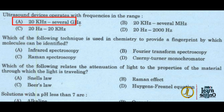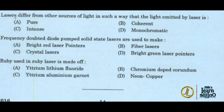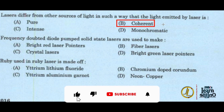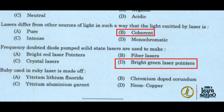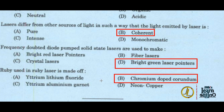Ultrasonic devices operate with frequencies in the range of 20 kilohertz to several gigahertz. Laser differs from other sources of light in such a way that the light emitted by laser is coherent. Frequency-doubled diode-pumped solid-state lasers are used to make bright green laser pointers. The ruby used in a ruby laser is made up of chromium-doped corundum — option B.